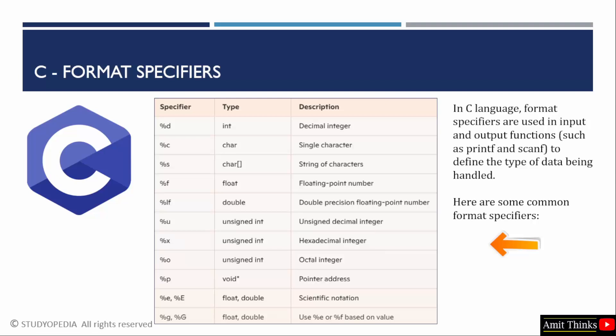Like for unsigned decimal integer, we use %u. For hexadecimal and octal, we use %x and %o respectively.